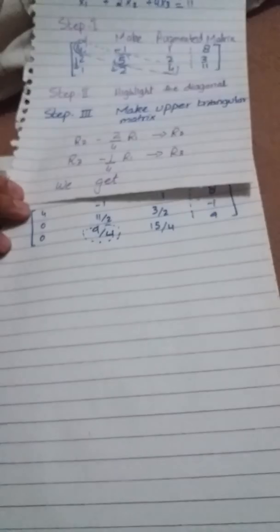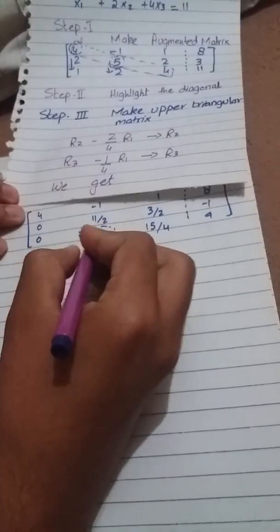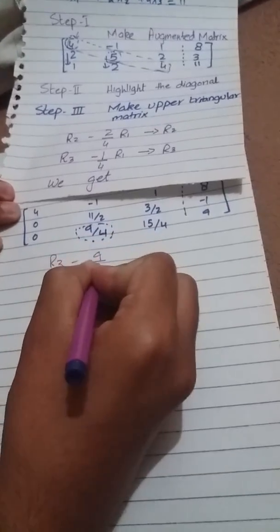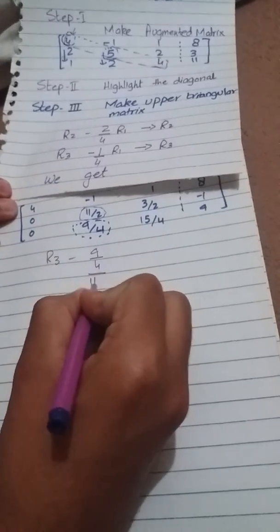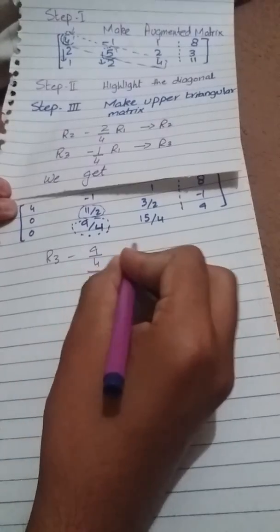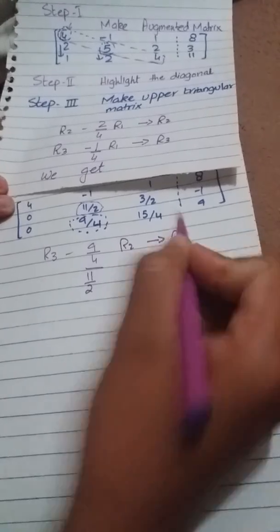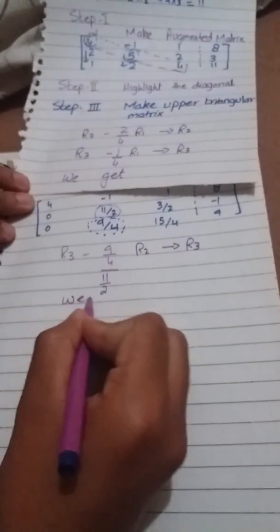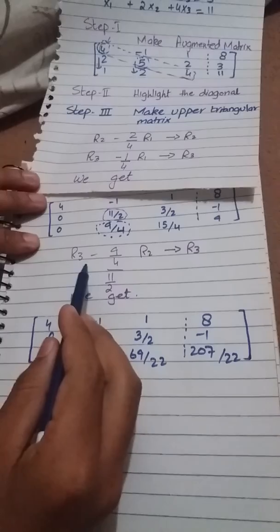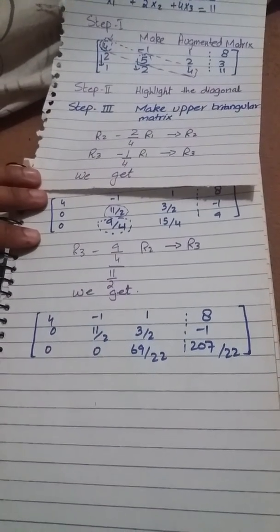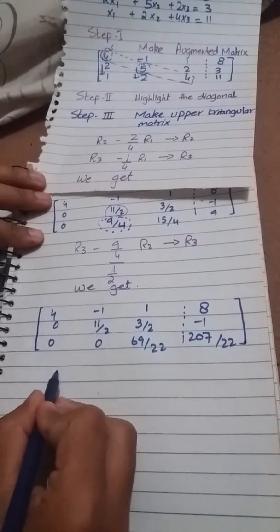Now for this element we have to perform another operation which is R3 minus the element we are going to make zero divided by the pivoting element 11/2 into that row which is R2 changing into R3. We get this matrix after solving this row operation.